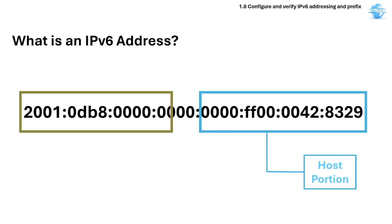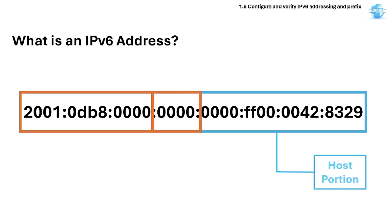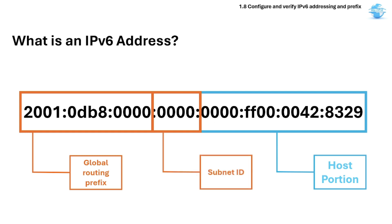The network portion is also divided into two parts. The global routing prefix, which is typically the first 48 bits and assigned by an ISP or registry, identifies the public network or organization. The subnet ID is the next 16 bits after the global routing prefix, allowing organizations to define subnets internally. Together they form a full /64 network prefix.